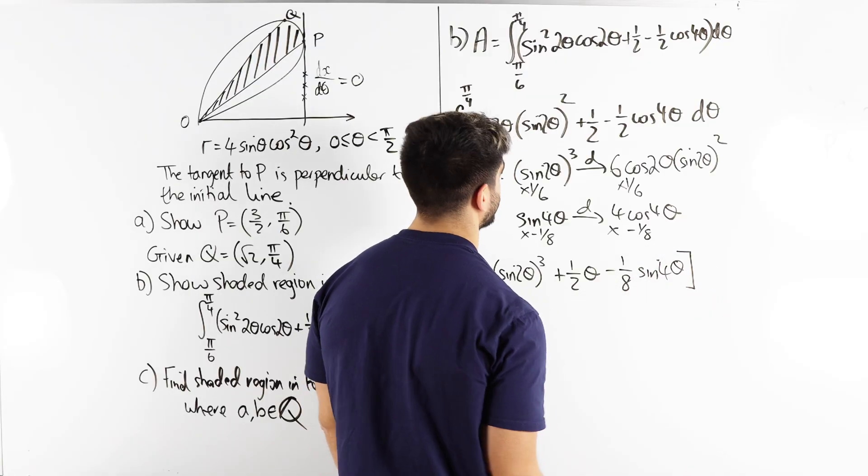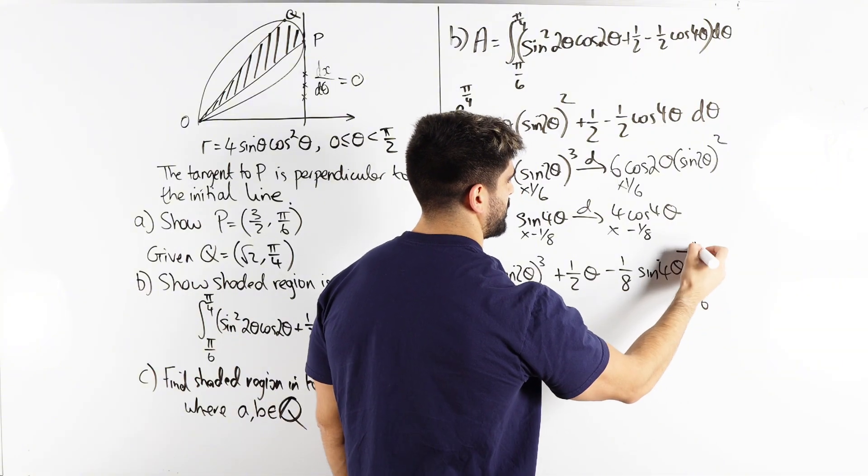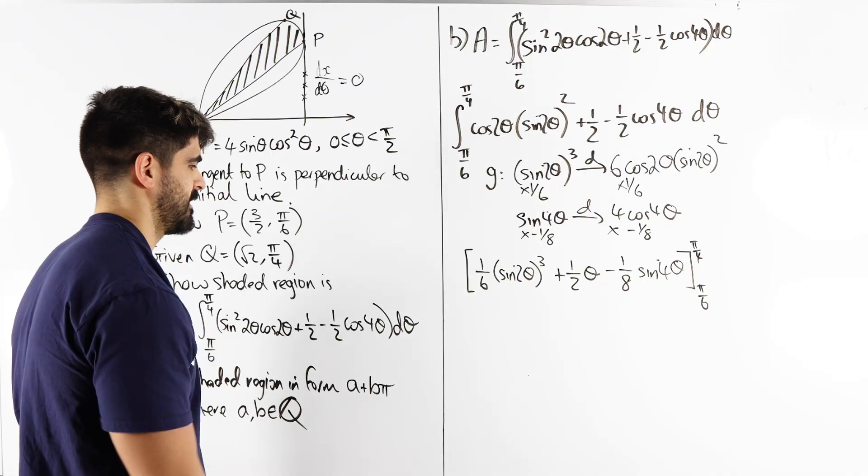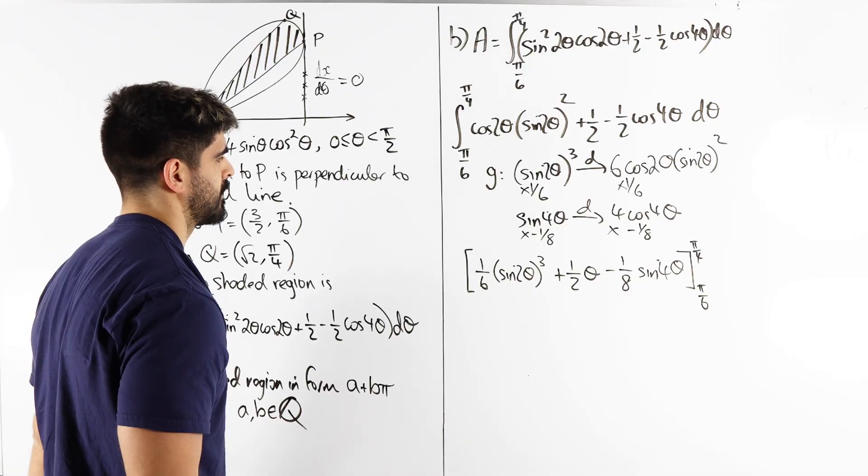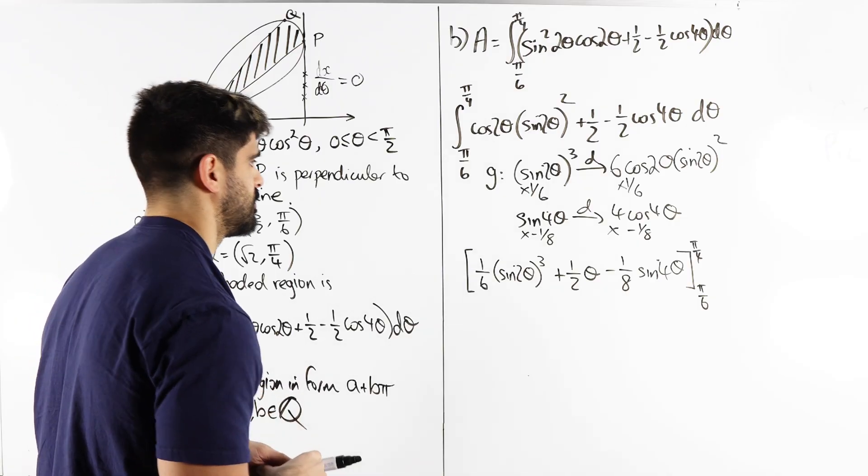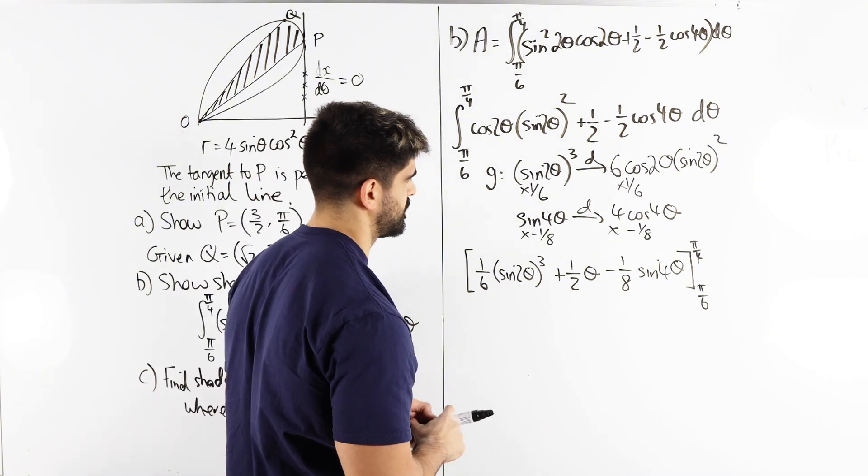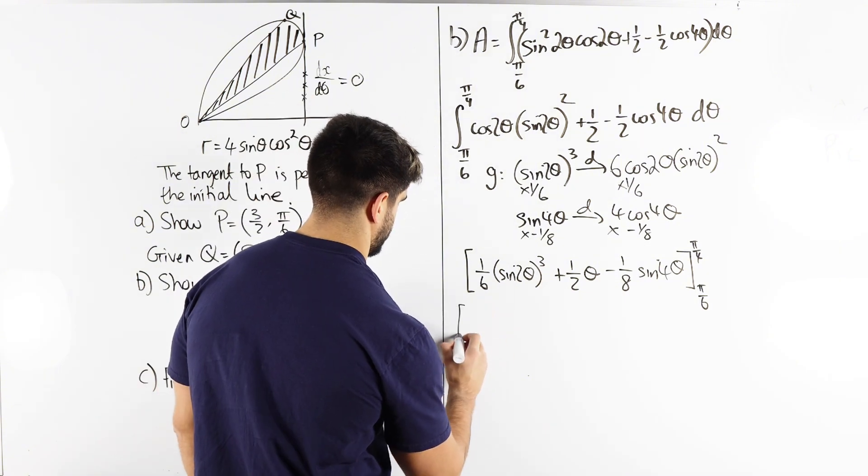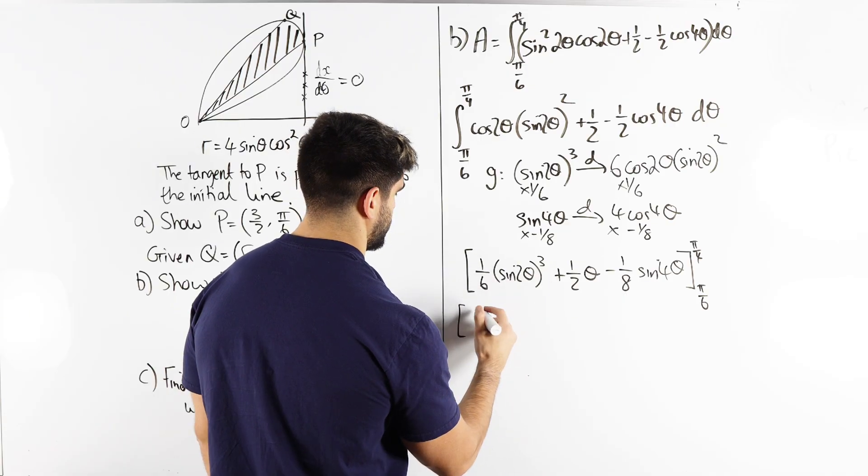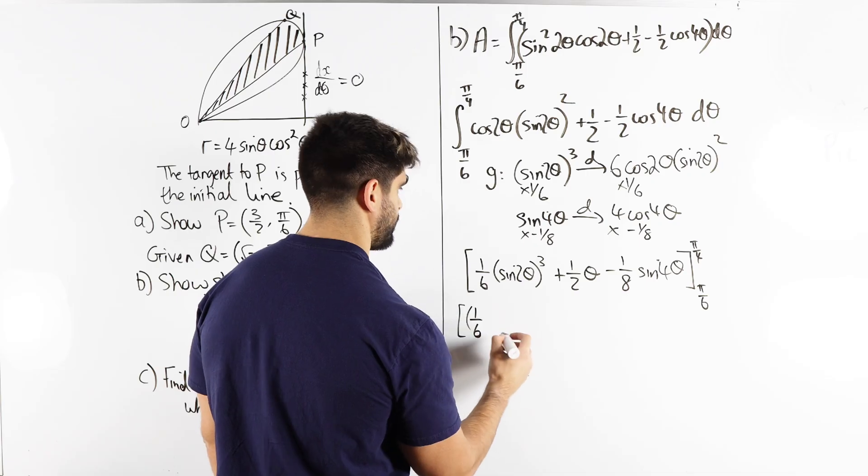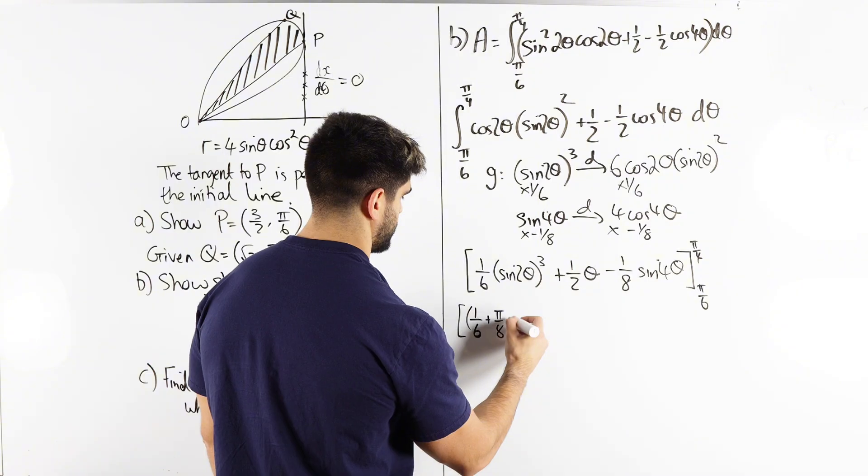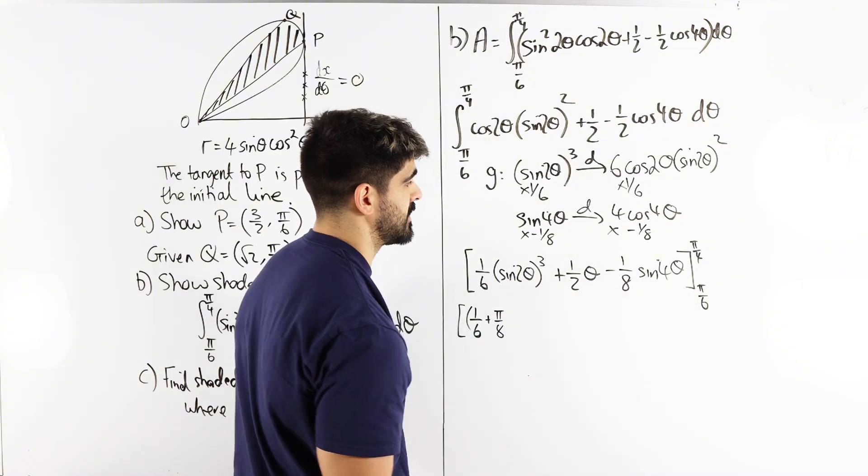Minus a half goes to minus one eighth. Now we just subbing our values, right? So subbing in pi over four, can I do this without a calculator? Sine of pi over two is one, one cubed is just one, so one sixth plus a half of pi over four is pi over eight.